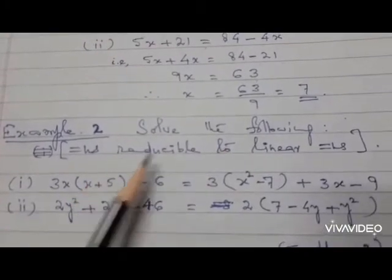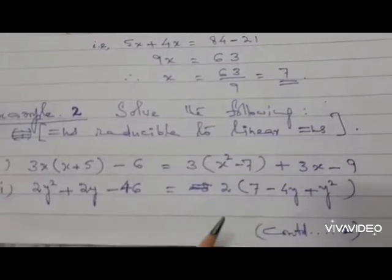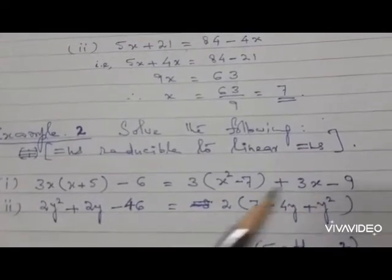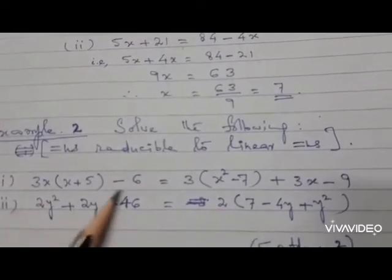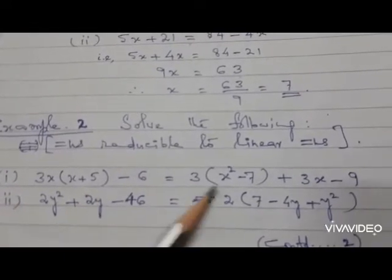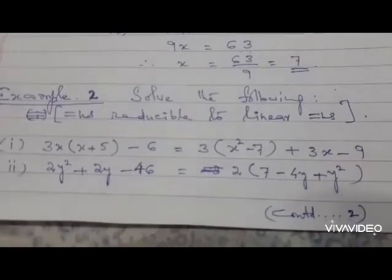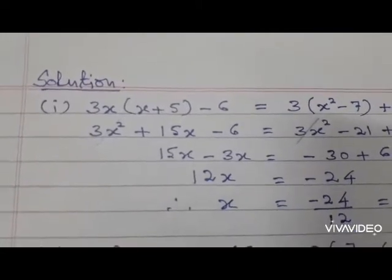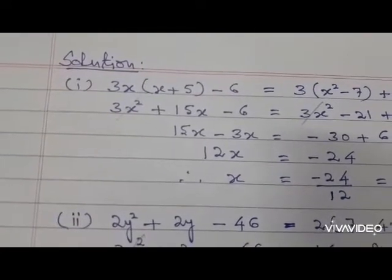Now we come to example 2, which we'll solve on the next page. These are equations reducible to linear equations, meaning they may initially have other variables like x² that will cancel out and become linear equations.